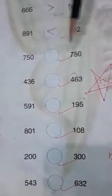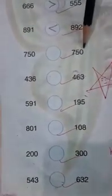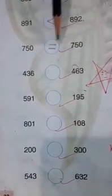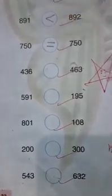Now 750 and 750. Both are the same, so 750 is equal to 750.